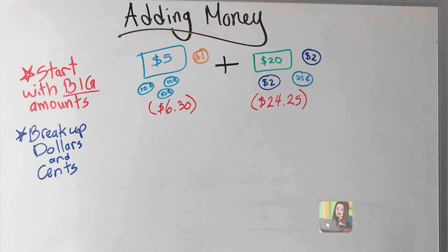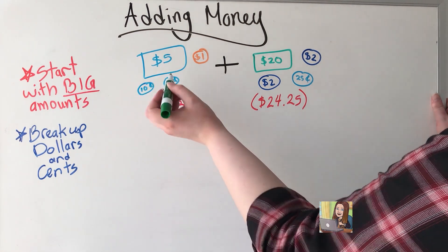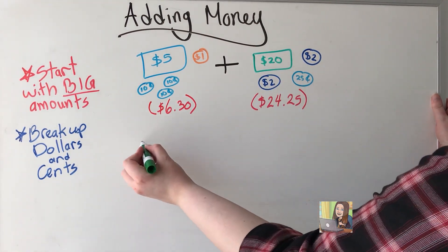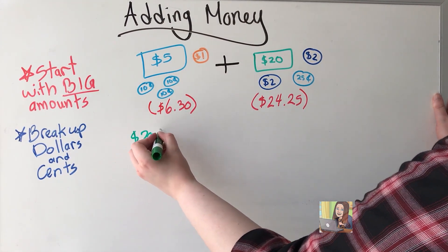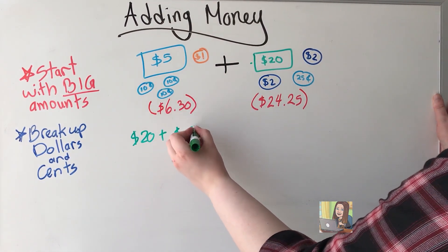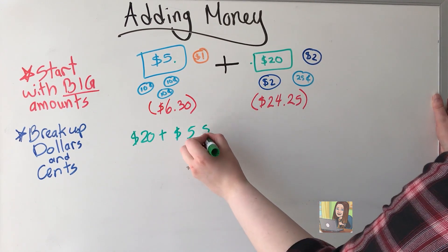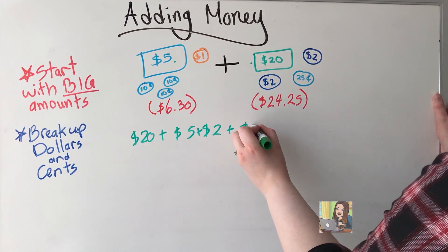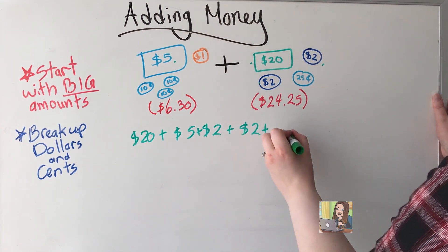So I'm going to start with the dollars. I'm going to look at what my biggest amounts are in both areas. I have a 20 over here. I have a 5. I have a 2. Another 2. And a 1.